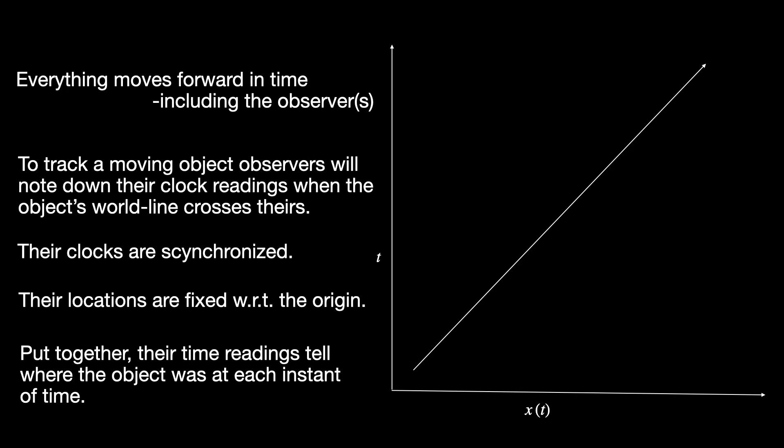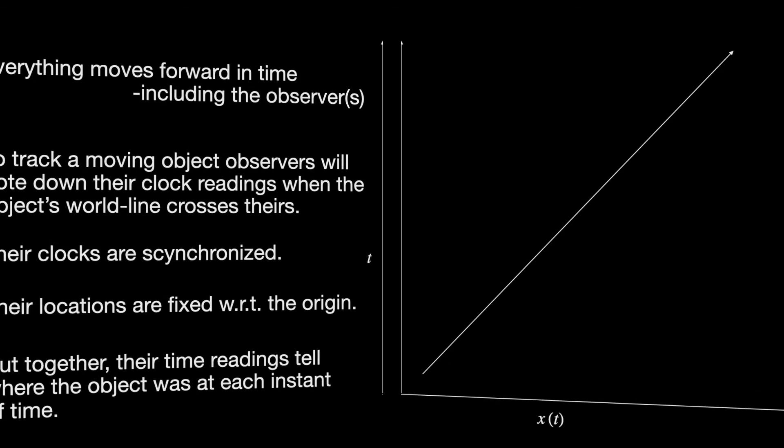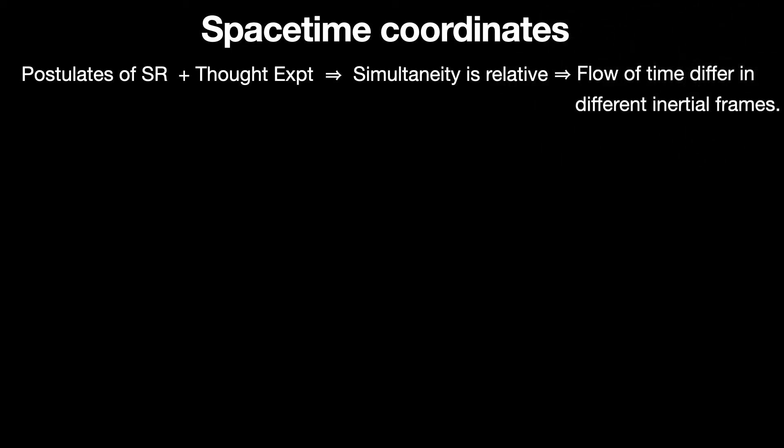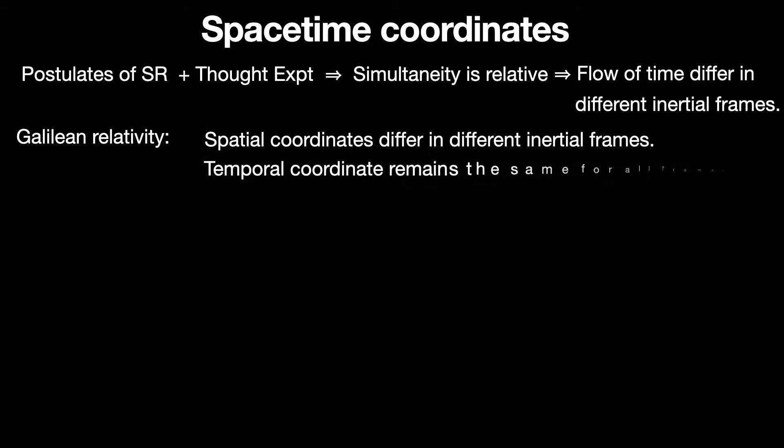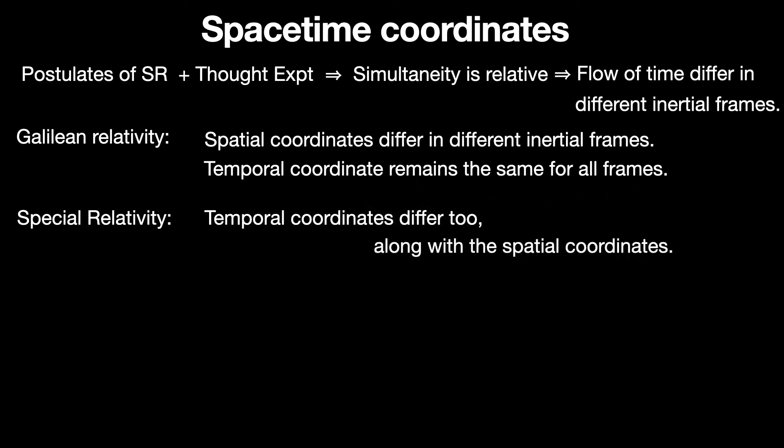Now that we have the basics of how observations of an object's motion are to be carried out, let us fix the convention for coordinates that are used to chart out the object's motion in a spacetime diagram mathematically. In a recent video, we discussed the postulates of special relativity. Check it out if you have not already. I will put the link in the i button for that. In that video, we discussed some thought experiments and established that according to the postulates of special relativity, observers in different inertial frames may not agree on the simultaneity of events. This in turn implies that time flows differently for different inertial observers.